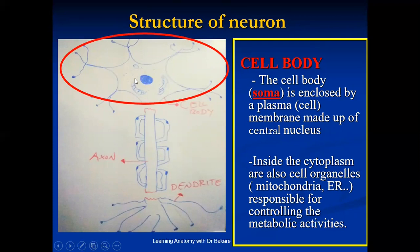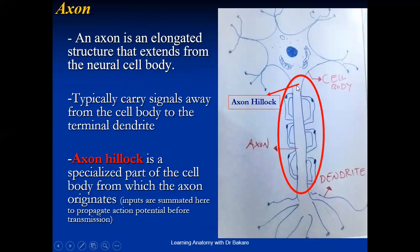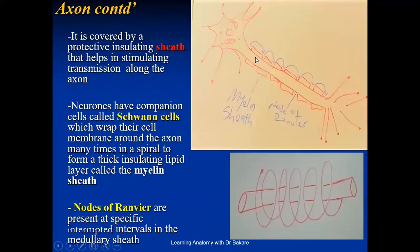The axon is an elongated structure that extends from the soma, or the cell body, and this is where the transmission of neural impulses is allowed. The first region to highlight is the axon hillock, which is the initial segment of the axon. This is where all impulses generated through the dendrites are summed up and energy is generated for them to be propagated down the axon.